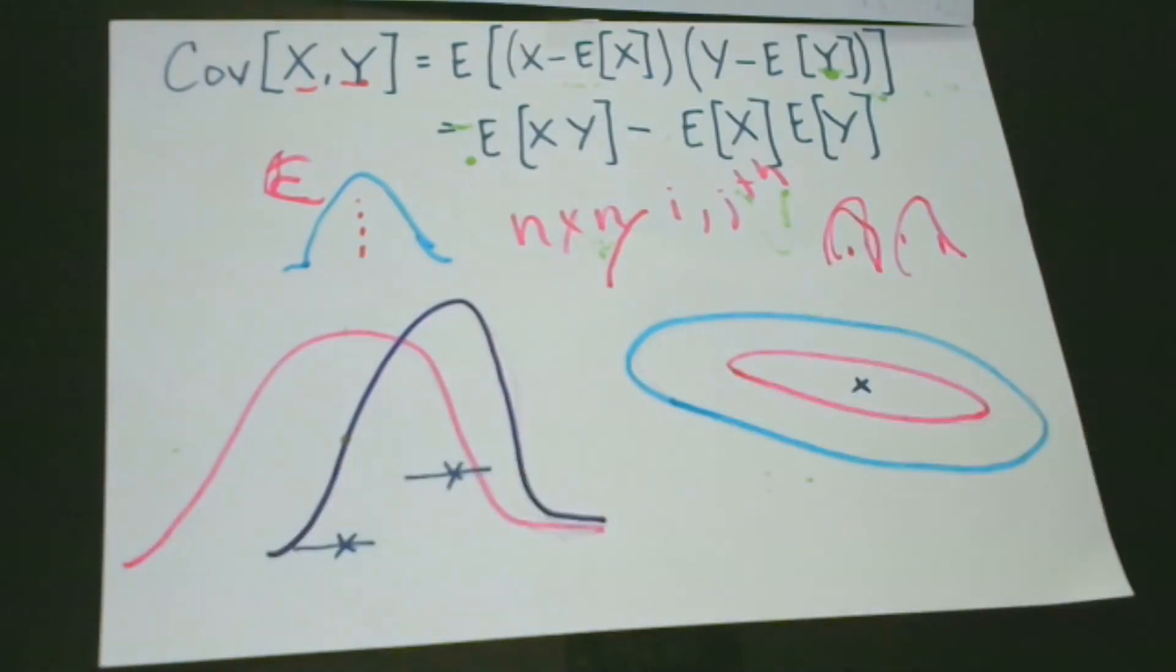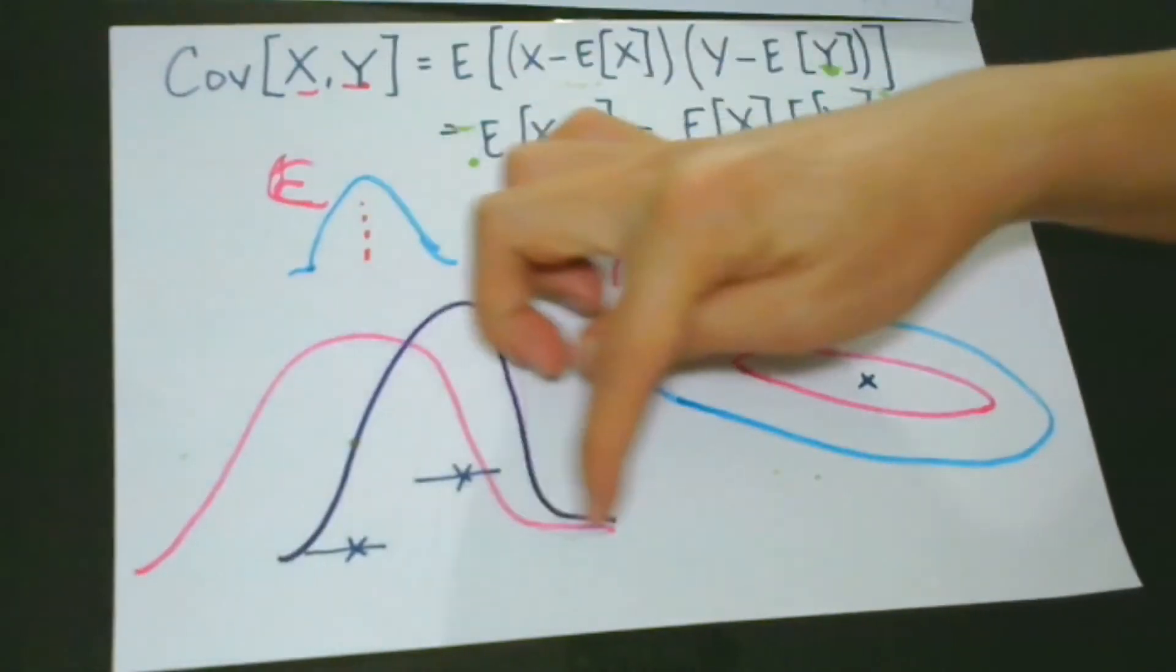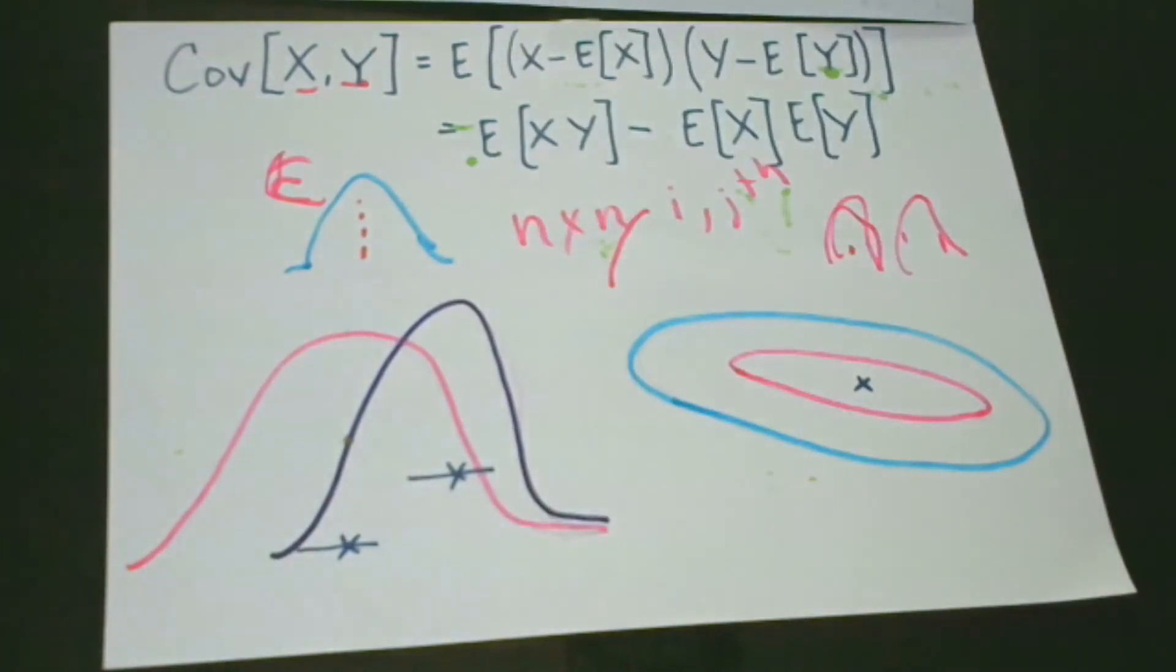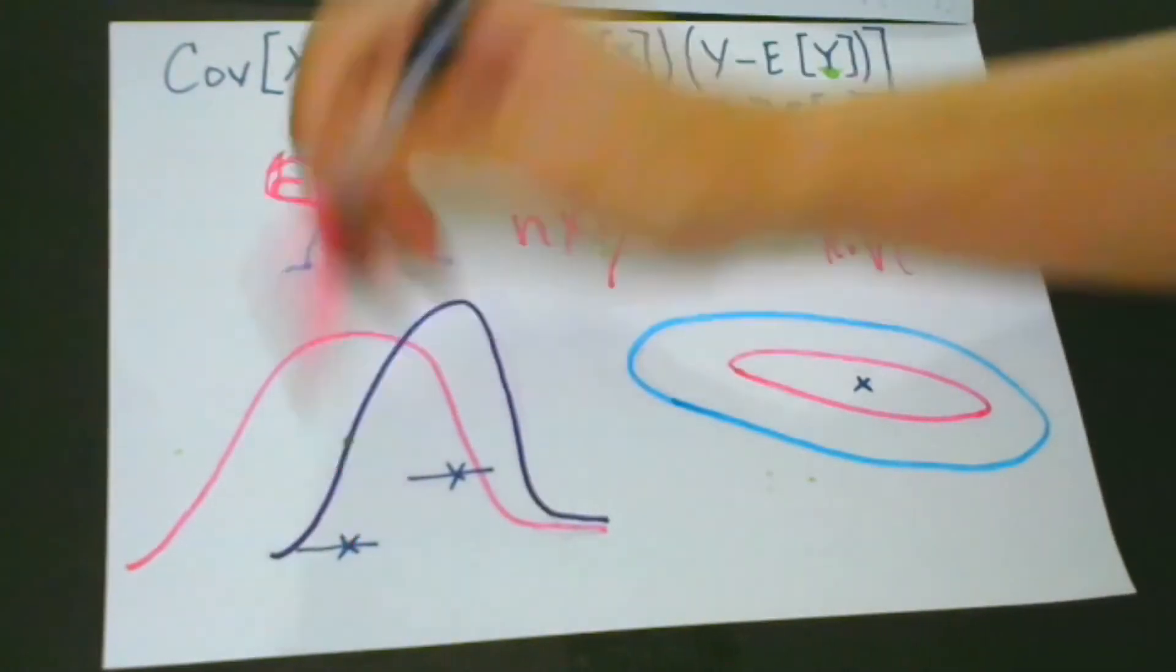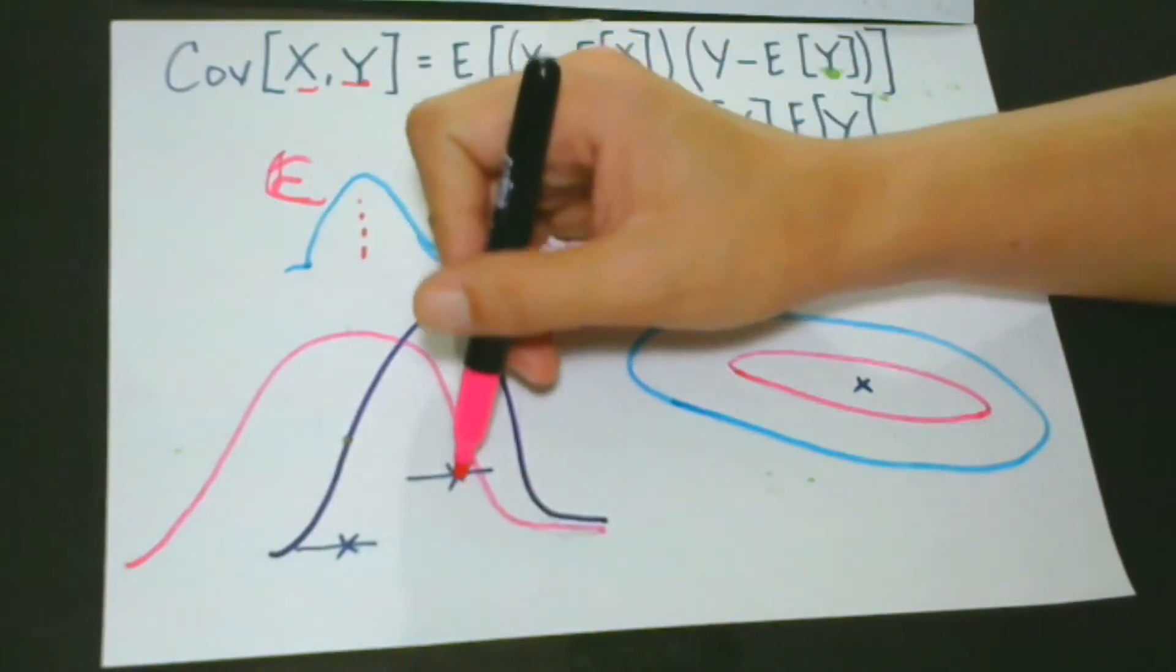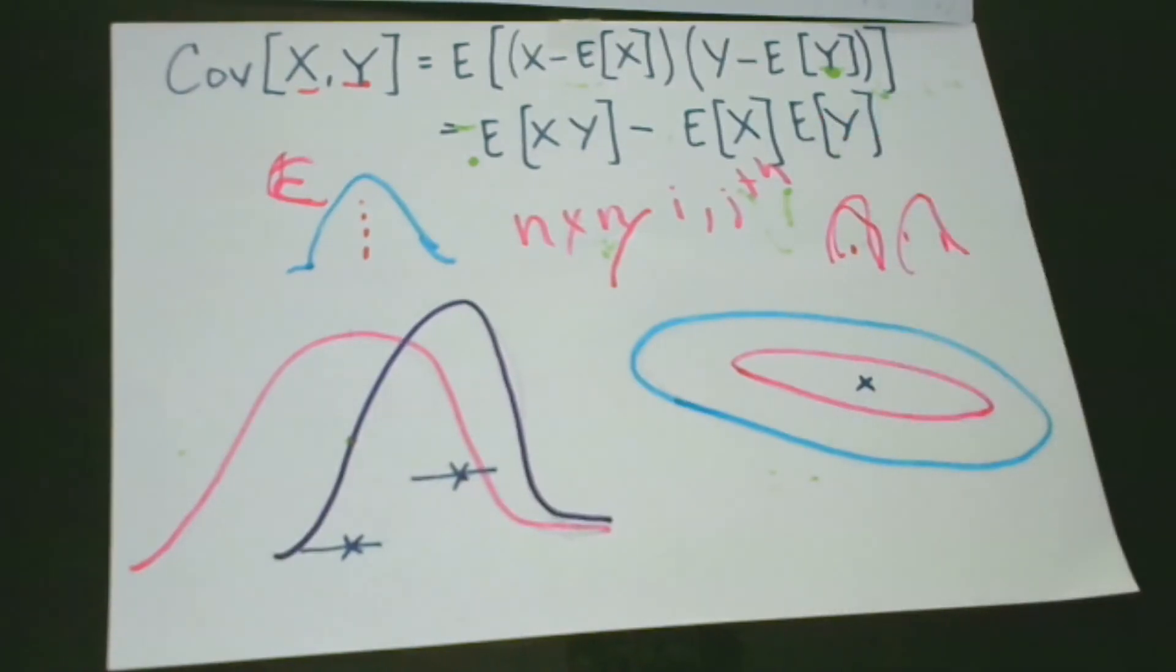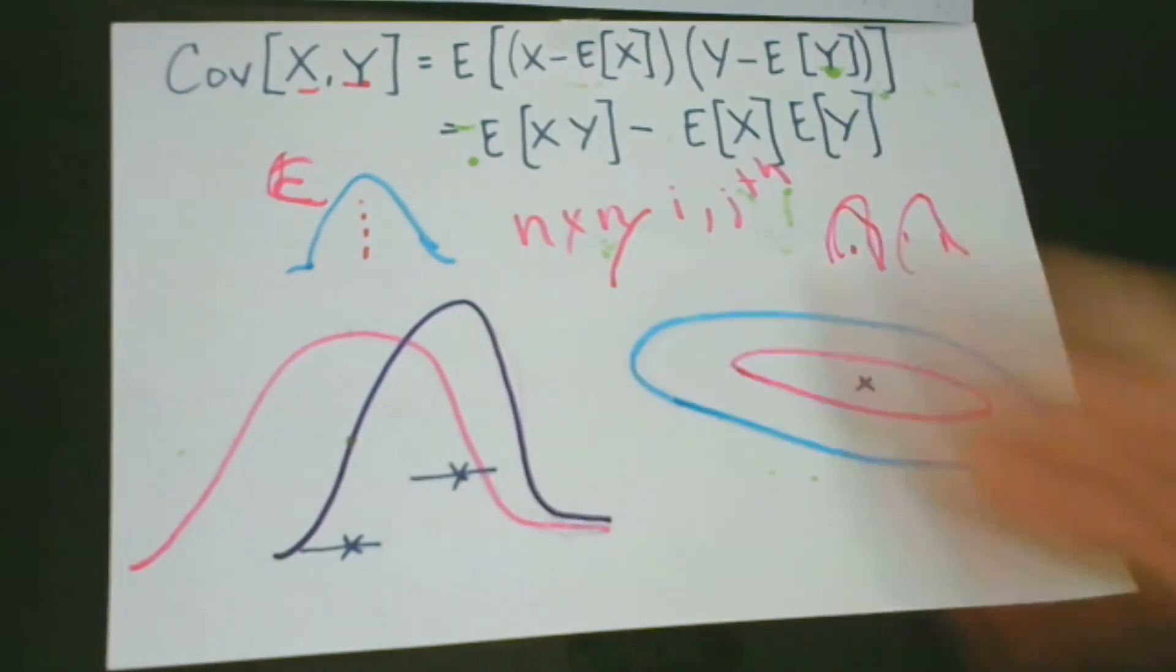So, we have here our shapes. So, for this one, for this bigger distribution, the mean is found here. And for this one, the smaller one, the mean is here. And for this elliptical shape, the mean is here at the center. So, what does each one mean?